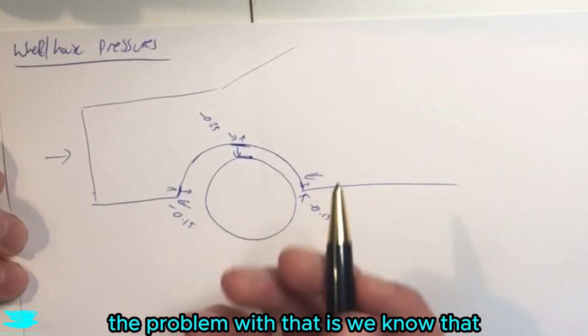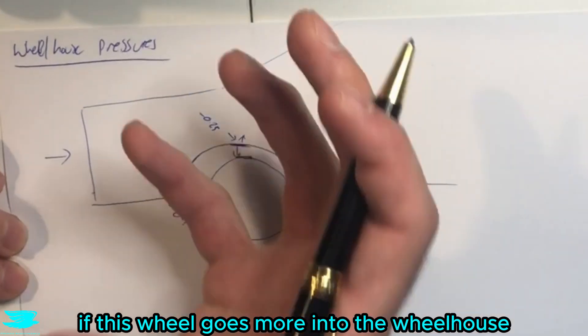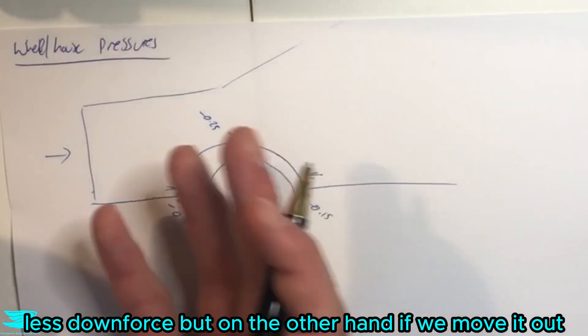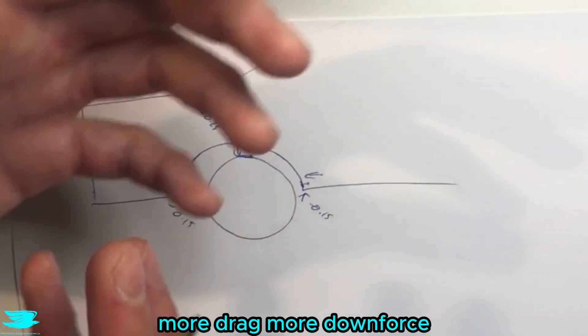The problem with that is we know that if this wheel goes more into the wheelhouse, we get less drag. So on the one hand, we get less drag, less downforce. But on the other hand, if we move it out, more drag, more downforce.